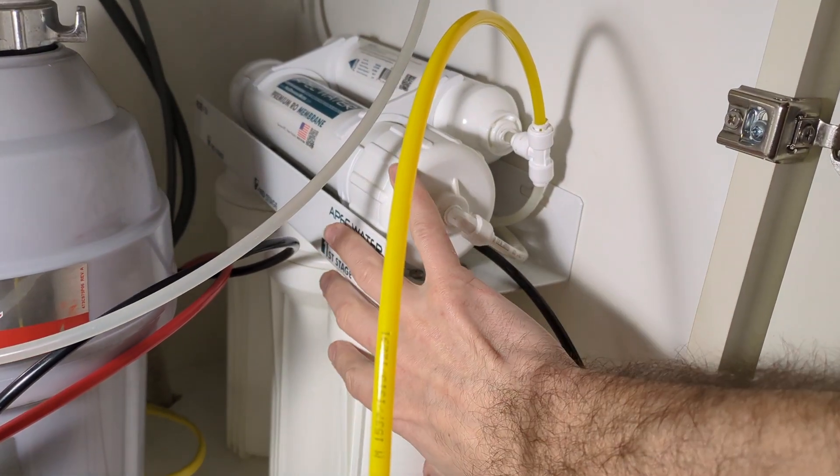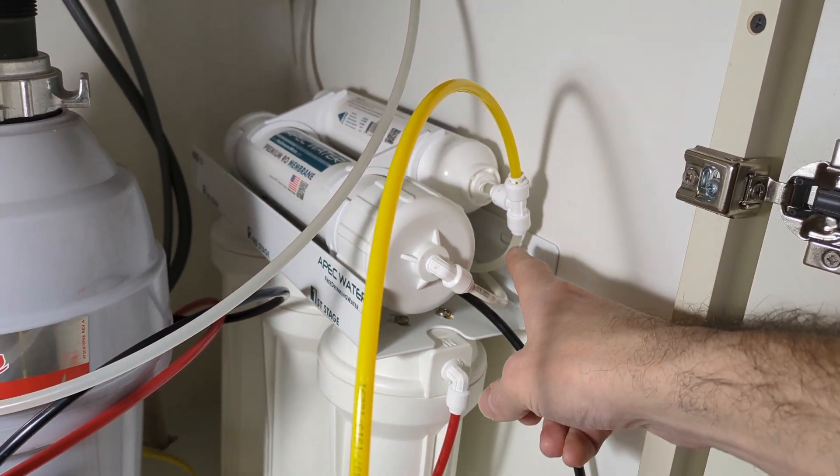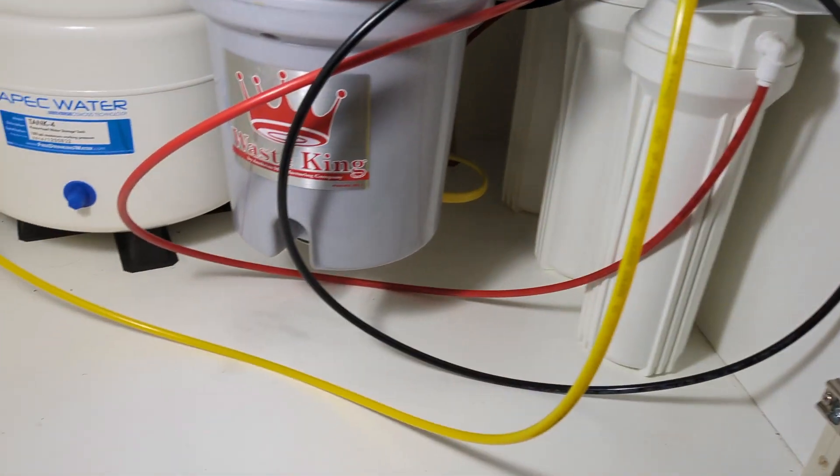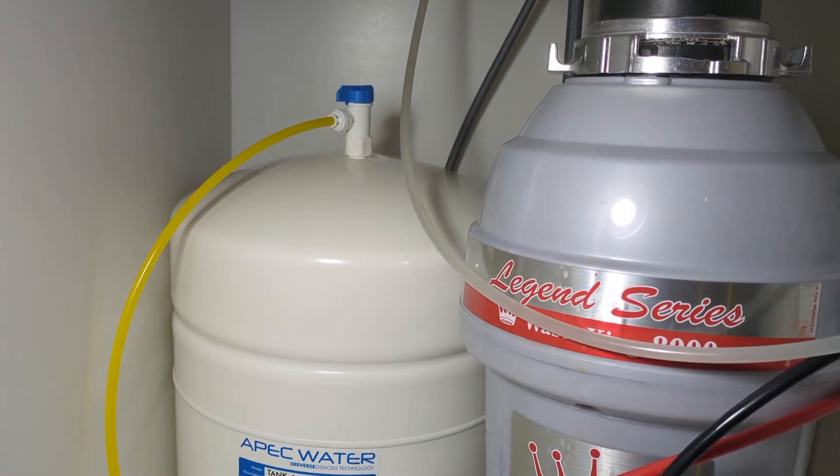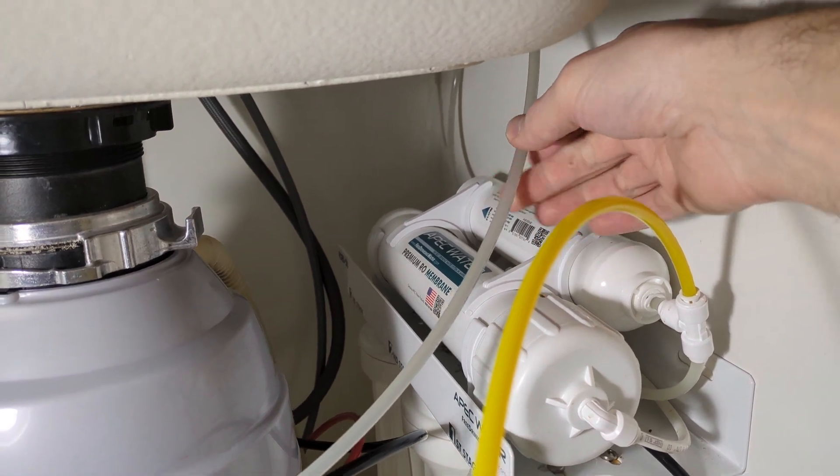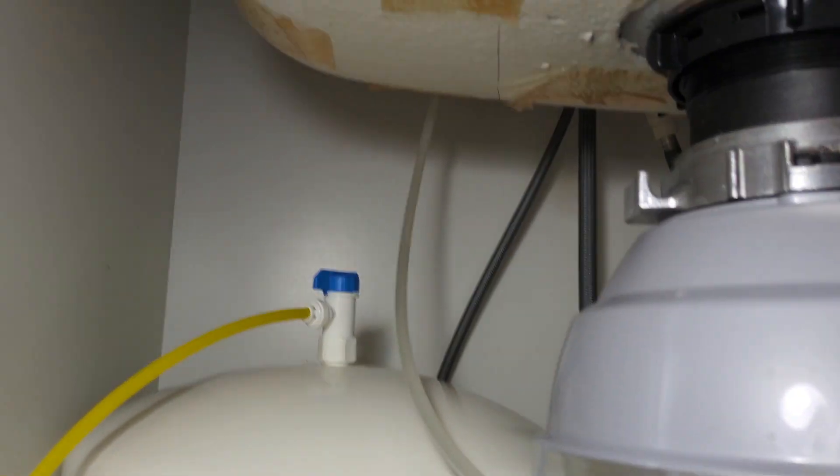So your water is going to pass through the first four filters here, and then the last one is connected over here to your tank. And then from there it goes up this line here. That goes up to your beverage faucet.